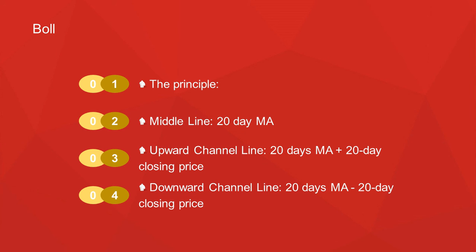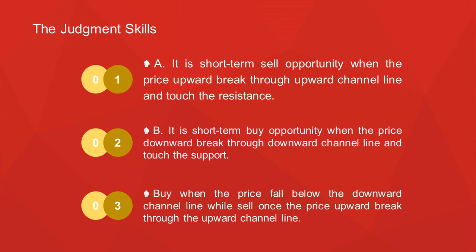So just now we talked about BIAS. I hope you can use this indicator to catch some short-term profit. If you can grasp one indicator very well, it's better than grasping many indicators but not using any well. The next indicator is BOLL. The principle: the middle line is the 20-day moving average, the upward channel line is the 20-day moving average plus 2 standard deviations of 20-day closing price, and the downward channel line is the 20-day moving average minus the same.